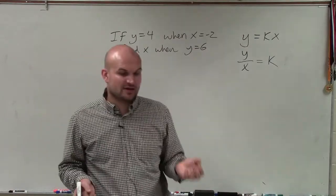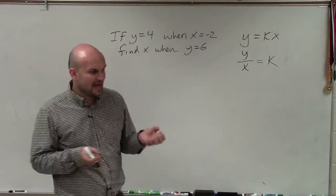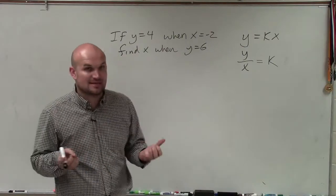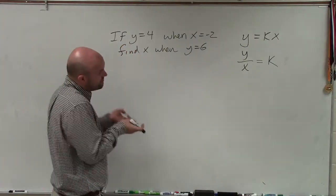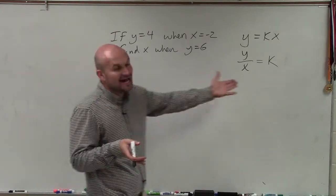So when you have two direct variations, and they both vary directly with each other with the same constant, what we can do is we can set them equal to each other. So if they both vary directly with each other, that means their constant is going to be equal.